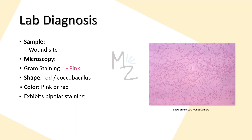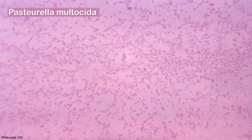For lab diagnosis, we need a sample from the wound site — where the cat or dog has bitten. Then we go for microscopy. On gram staining, this bacterium appears gram-negative; it is rod or coccobacillus in shape, pink or red colored because it is gram-negative, and it exhibits bipolar staining — it stains at both poles but not from the central area.